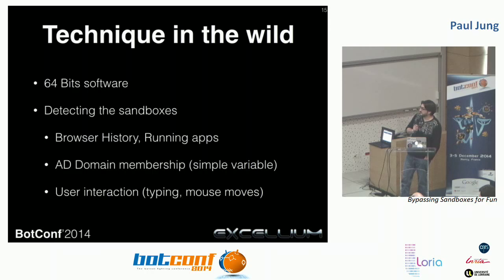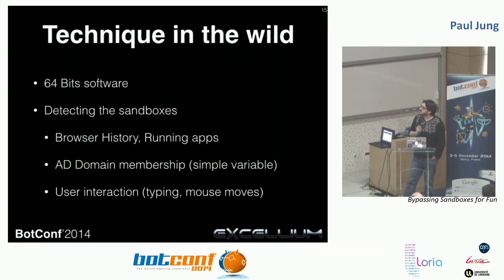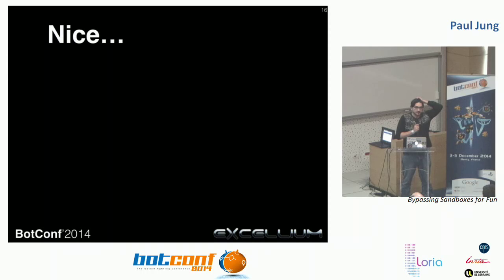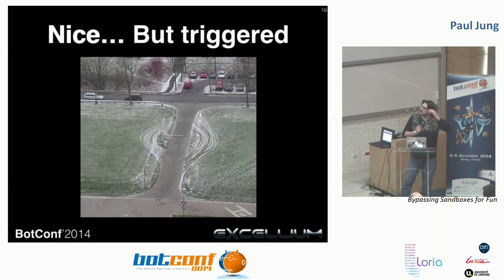You could use user interaction detection. A real user moves the mouse, types something. If nothing is moving, you are probably in a sandbox. However, all these checks are quite well detected now. The problem is that if these checks use API calls, the sandbox will log them. So you may detect that you are in a sandbox, but you are also detected as trying to escape the sandbox. So it's not a good thing to use API calls for sandbox detection.